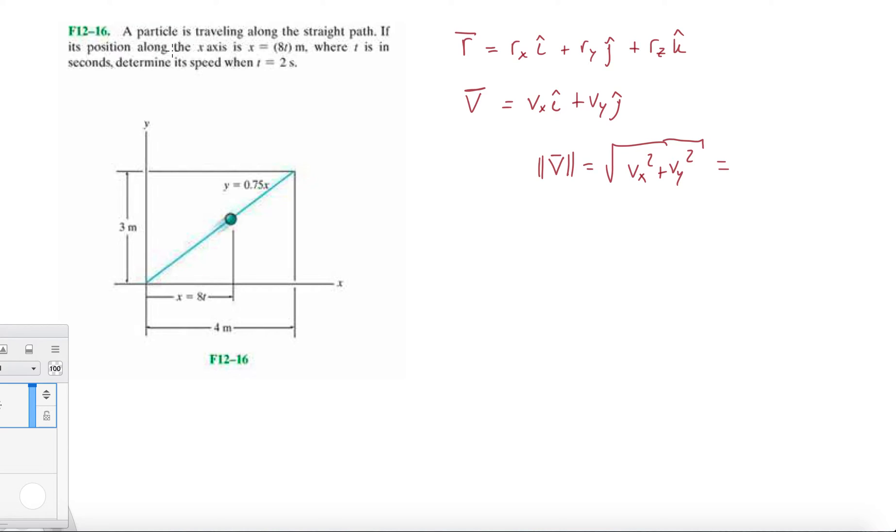We're given the position along the x-axis: x equals 8t, where t is in seconds. Determine its speed when t equals 2. So what's Vx at t equals 2? But we're also given y equals 0.75x, so we need to find the Vy component at t equals 2, and then get the magnitude at t equals 2.